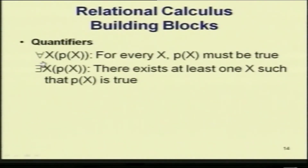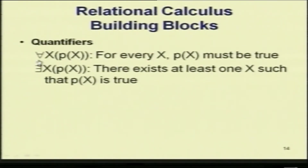You also have quantifiers. Given a predicate p containing variable x: if you say 'for all x, p(x),' it means that for every value of x, p(x) must be true. The other quantifier is 'there exists an x for which p(x) is true' — meaning at least one x for which p(x) holds. It can be more than one, but you cannot specify that for all x the predicate is true using the existential quantifier.